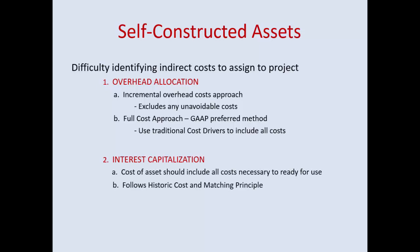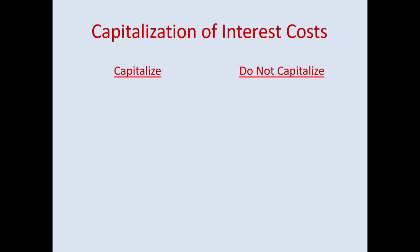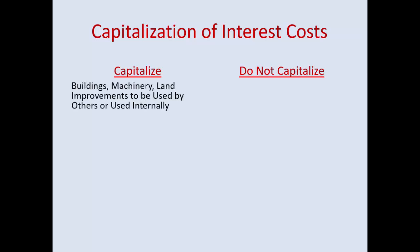The cost of an asset should include all costs necessary to ready it for use — that's a general GAAP rule. Following historic cost and the matching principle, we are allowed to capitalize some of the interest. We can capitalize interest as it relates to buildings, machinery, and land improvements, whether used by others or used internally.